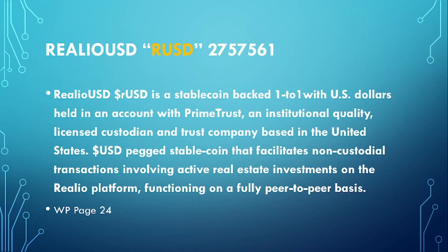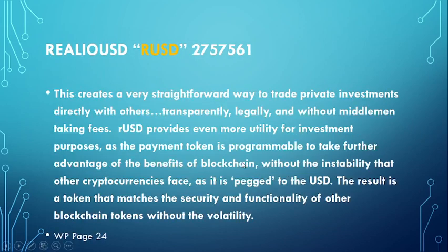Two of the three Realio tokens are not intended to be speculative — they were never designed that way. RIO is gas and RUSD is a stablecoin. The only one of the three intended to have any capability of increasing in value is the RST token. RUSD creates a straightforward way to trade private investments directly with others transparently, legally, and without middlemen. It provides utility for investment purposes as a programmable payment token that takes advantage of blockchain benefits without the instability that other cryptocurrencies face.